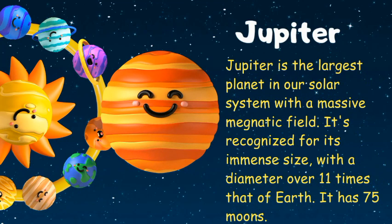Jupiter is the largest planet in our solar system with a massive magnetic field. It's recognized for its immense size, with a diameter over 11 times that of Earth. It has 75 moons.